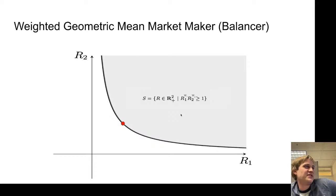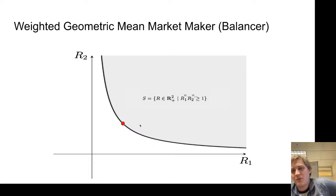What does Balancer look like? Basically it looks very similar to Uniswap, but warped and stretched a little bit. Even market makers like this have a gray area that's a convex shape — there are no inward bumps, it's all very smooth.